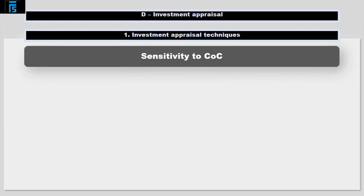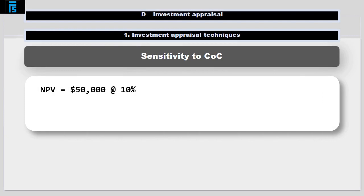Firstly, let's consider sensitivity to the cost of capital. With our project, the NPV at 10% is $50,000. Do you remember what the internal rate of return tells us? It is that discount rate that yields an NPV equal to zero.